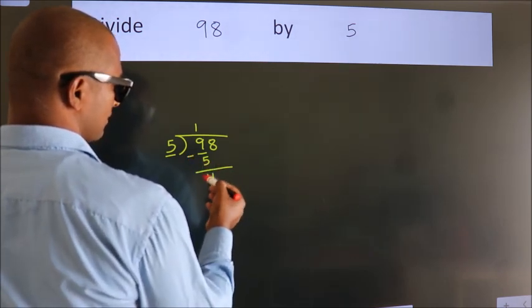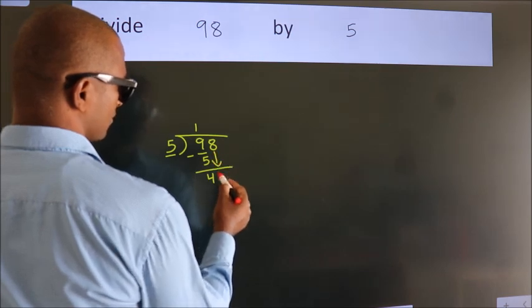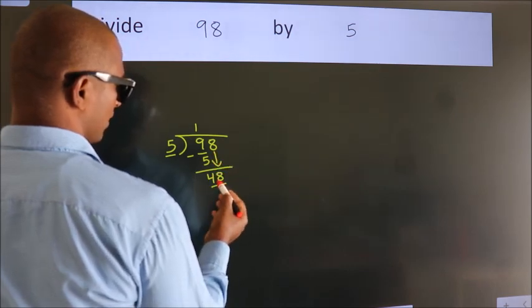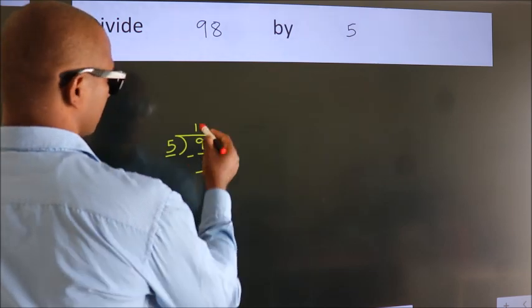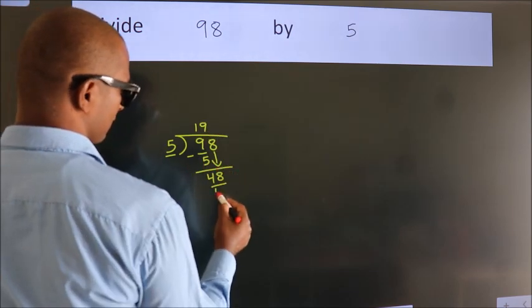After this, bring down the beside number. So 8 down, making 48. A number close to 48 in the 5 table is 5 nines 45.